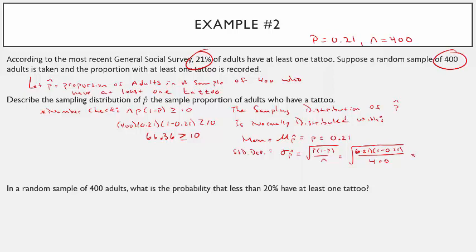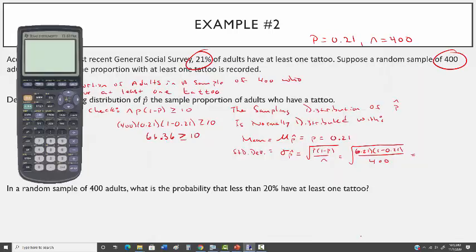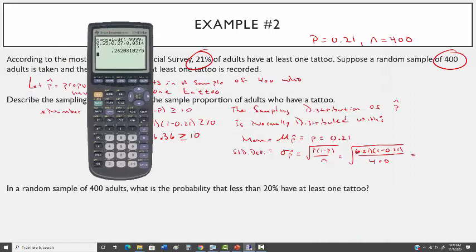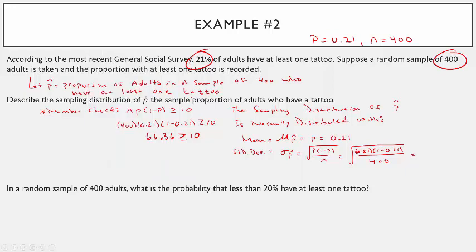On the TI-83: 2nd function, square root, 0.21 times (1 minus 0.21) in parentheses, divided by 400, close the outer parentheses. Going out to four decimal places, sigma p-hat equals 0.0204.